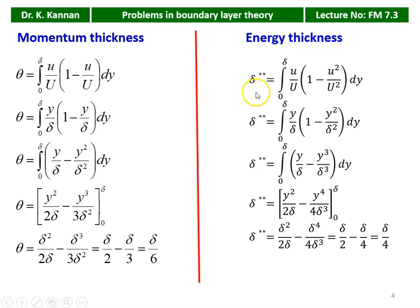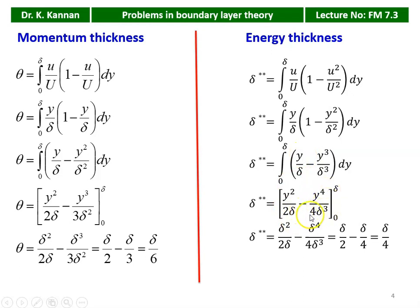The energy thickness δ** equals the integral from 0 to δ of (u/U)(1 − u²/U²) dy. Substituting u/U = y/δ: integral from 0 to δ of (y/δ)(1 − y²/δ²) dy = integral of (y/δ − y³/δ³) dy. Integrating: y²/(2δ) − y⁴/(4δ³), evaluated from 0 to δ, giving δ/2 − δ/4 = δ/4. The energy thickness is δ/4.